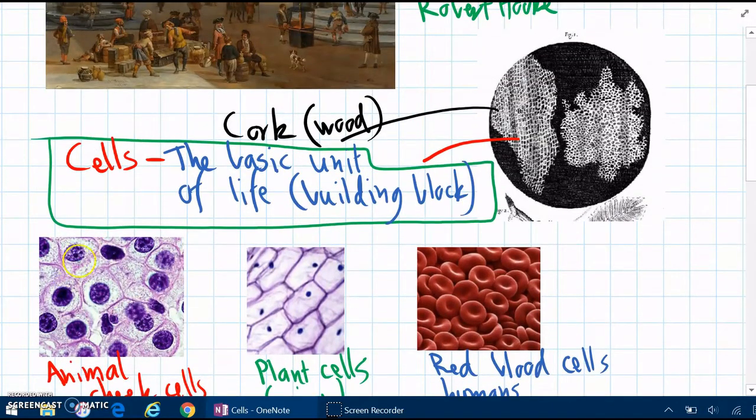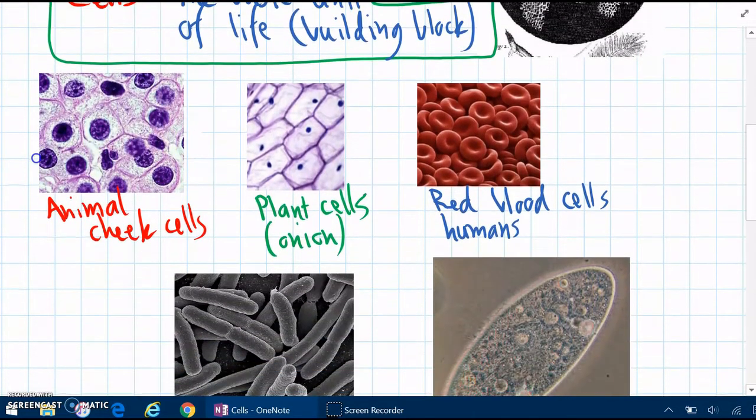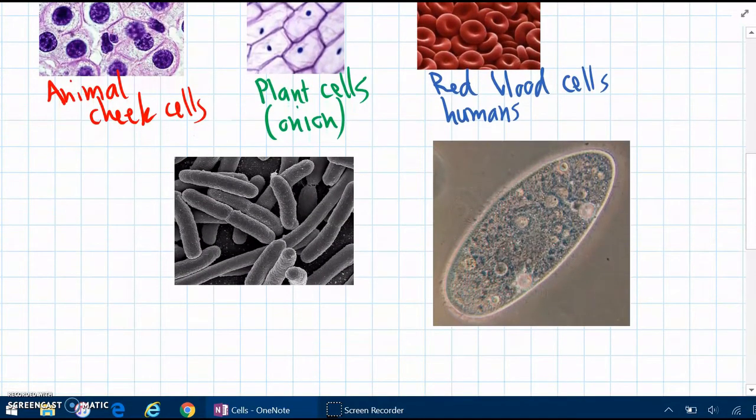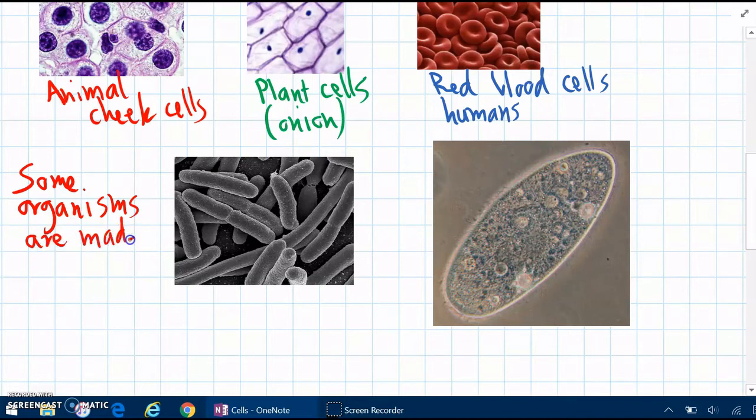So we can see here that all organisms are made up of lots of cells. But another thing that they discovered when looking through a microscope is that some organisms are actually just made of one cell. So some organisms are made of only one cell. And we call these unicellular organisms.